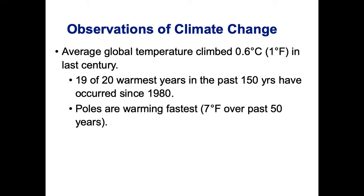We know that 19 of the 20 warmest years in the past 150 years have occurred since 1980. And the poles are warming a lot faster than other parts of the planet.